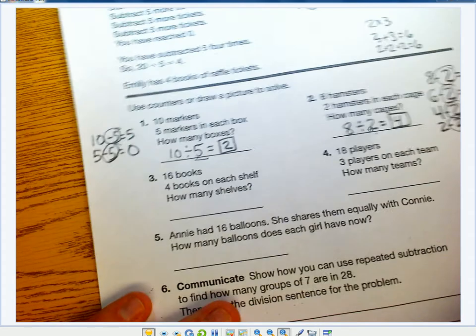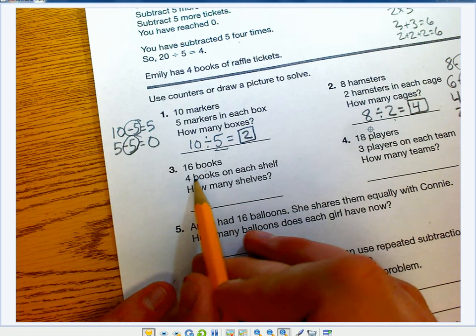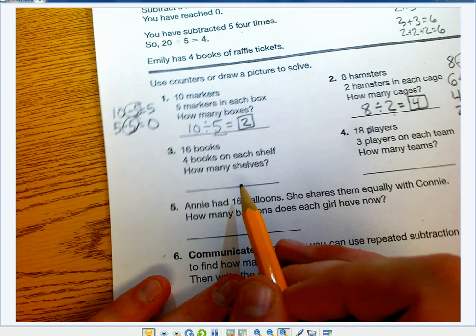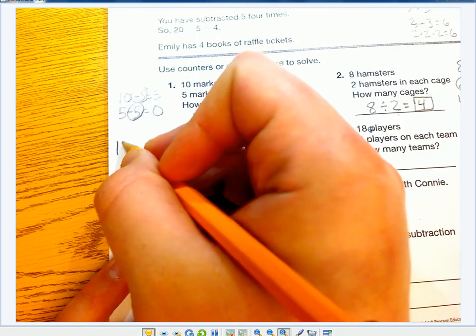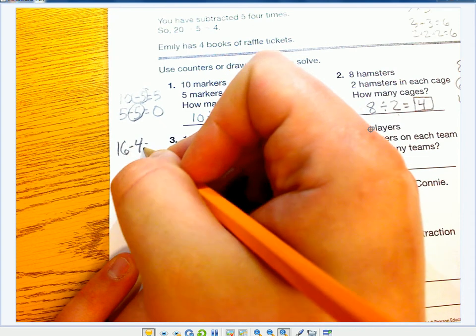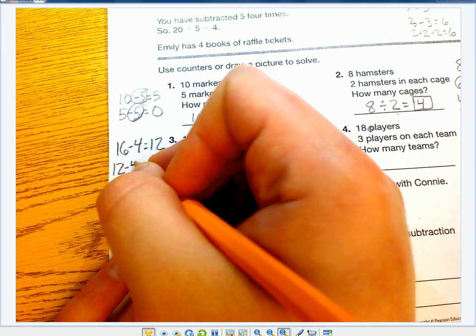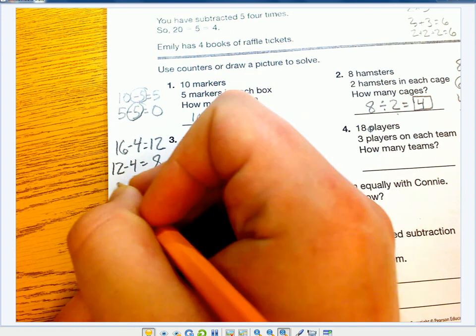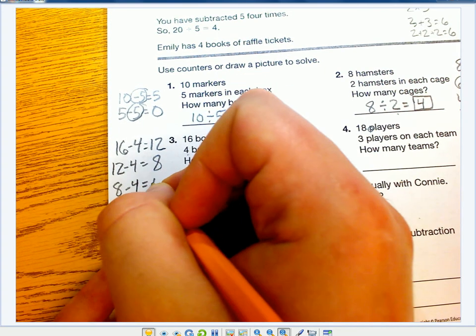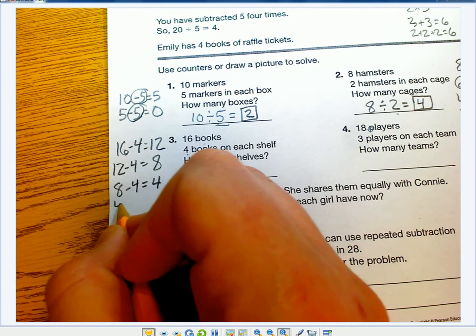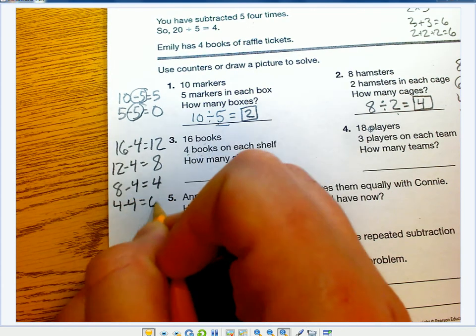One more with you. 16 books, 4 books on each shelf, how many shelves? I'm going to start with 16, subtract 4, that equals 12. 12 minus 4 equals 8. 8 minus 4 equals 4. And finally, 4 minus 4 equals 0.